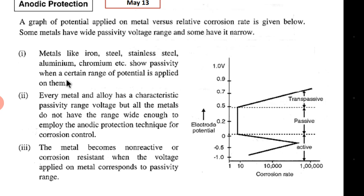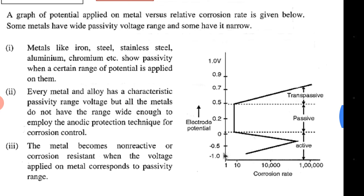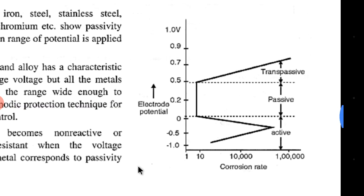Chromium and similar metals show passivity when a certain range of potential is applied. As shown in the diagram on the right side: for any metal, if a potential is applied and the corrosion rate is studied, the metal initially shows a constant increase in corrosion rate as the potential increases. But when it reaches a particular potential, the corrosion rate starts decreasing.